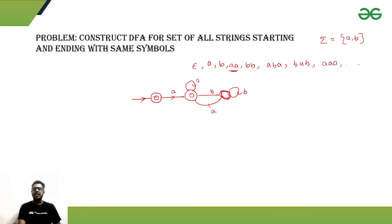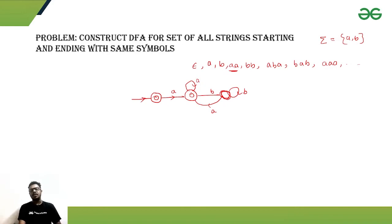If we are getting a 'b' anywhere, we will go to some non-accepting states, and from those non-accepting states we need an 'a' to come back to the final state. This logic covers all the strings that start with 'a'.